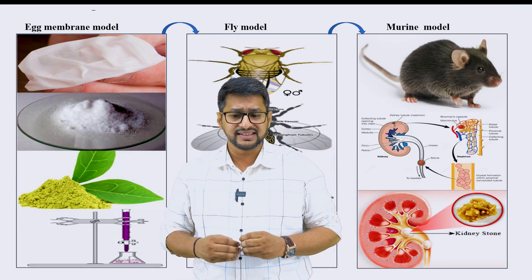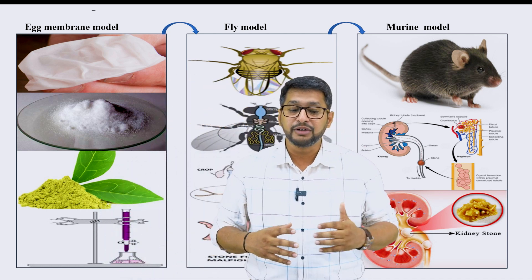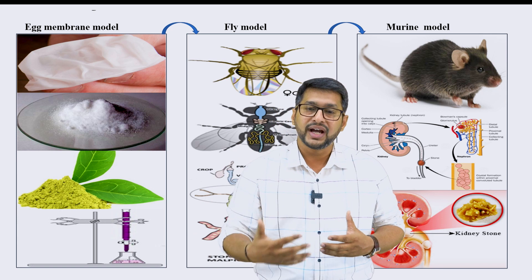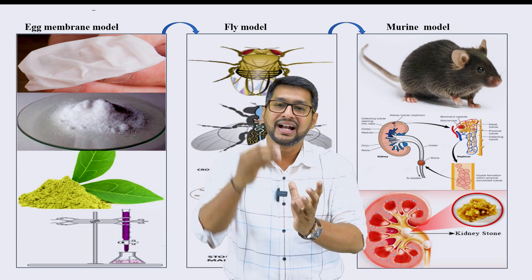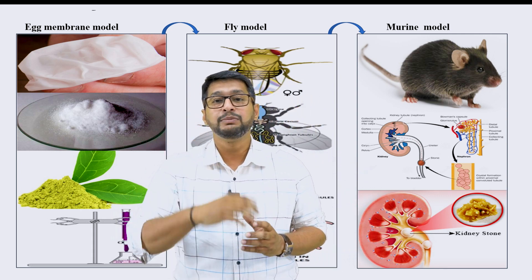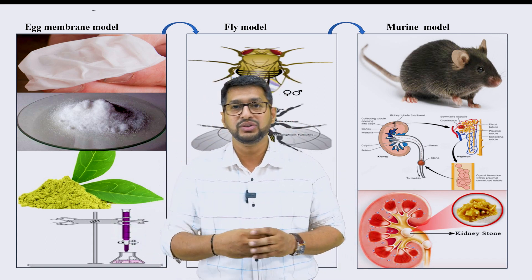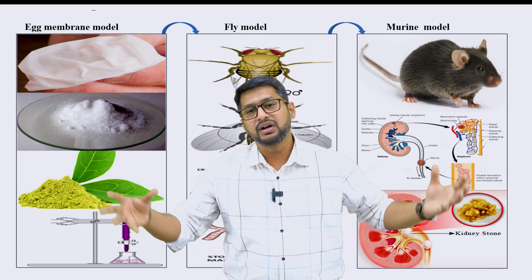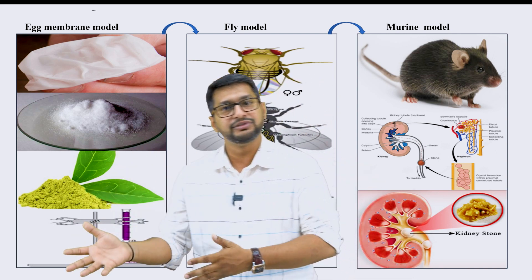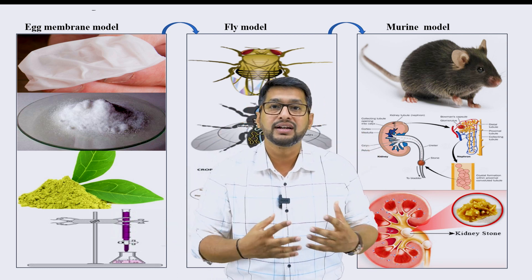Let me give you certain examples so that you will appreciate the illustration in a much better way. Especially in terms of the egg membrane model, you can isolate the egg membrane from a chicken egg. Once you isolate it, you use it as a dialysis bag, add the calcium oxalate, and then add the ligand molecule or chemical molecule anticipated for dissolving the calcium oxalate stone. You keep it in a buffer, allow a particular time, and then calculate the rate of dissolution comparing normal versus induced versus treated. That is how you mimic a kidney stone model using in vitro methods.